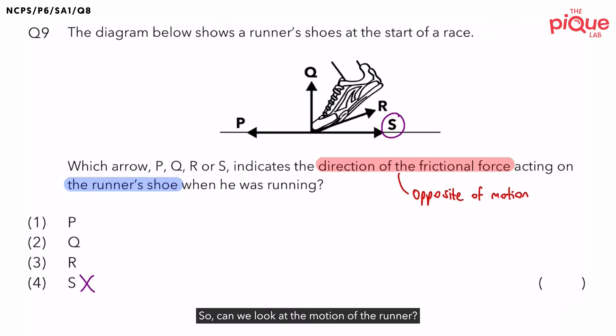So, can we look at the motion of the runner? No, instead, we should look at the motion of his shoe. So, think about this. If you want the runner to move forward towards the left, how is his shoe going to move?